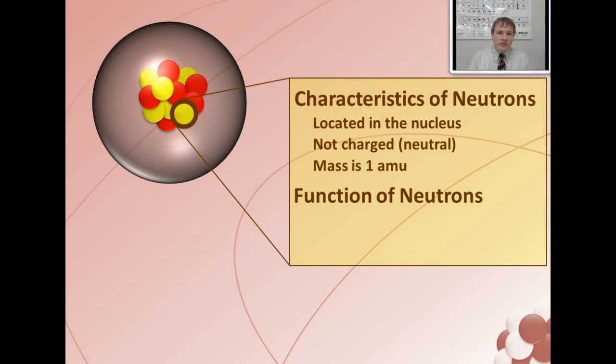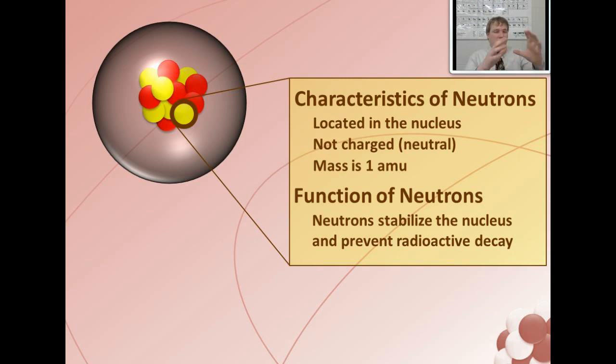The purpose or function of a neutron in an atom is they give the nucleus stability. They make sure that the nucleus is stable so it doesn't decay and break apart so this atom changes into different atoms. Neutrons stabilize the nucleus of an atom. Another way to think about it is atoms that are radioactive are radioactive and they'll break apart because they have an imbalance of neutrons.